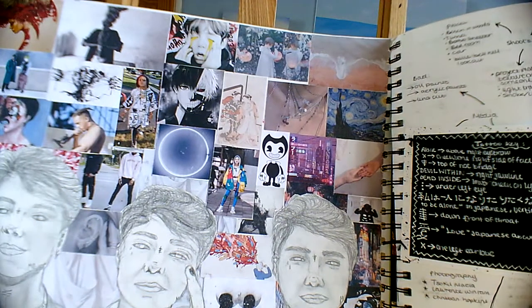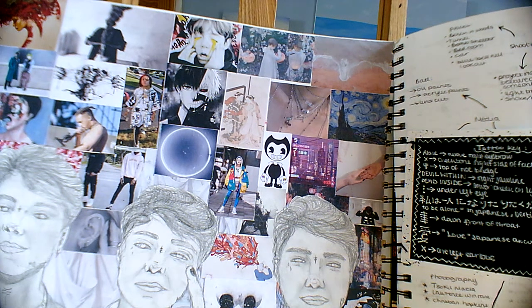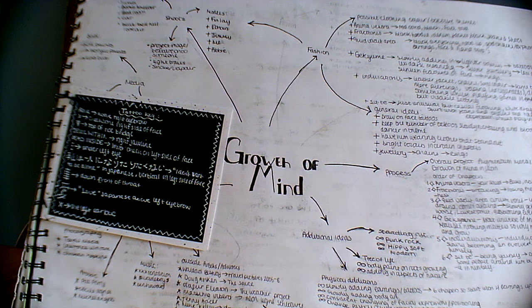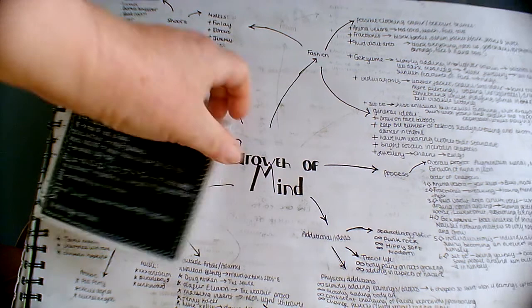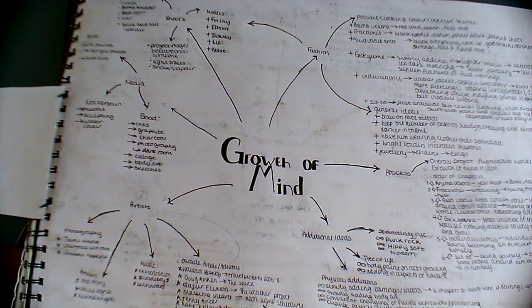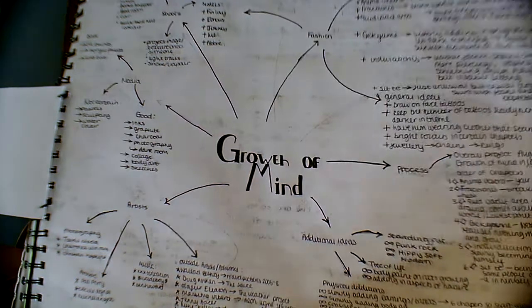We then move on to a mood board. A mood board should be a lovely combination of maybe artists that you know, plus other images that are kind of inspiring you. Then it goes on to a mind map, which is really interesting. A mind map should be absolutely full of ideas. We can see some artists she's thought about, the media — loads and loads of ideas she's got here.